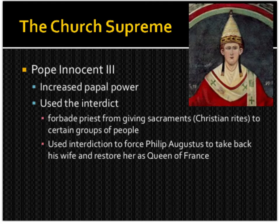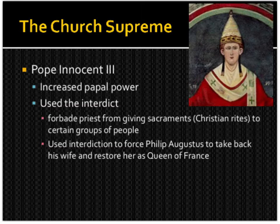The church becomes supreme. Pope Innocent III increased papal power by using something called the interdict — he reigned as pope from 1198 to his death in 1216. He forbade priests from giving sacraments such as communion or the Eucharist to certain groups of people. For example, he used the interdict to force Philip Augustus to take back his wife and restore her as Queen of France when Philip had thought of leaving her.